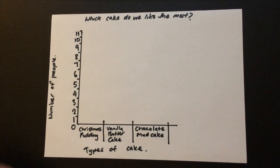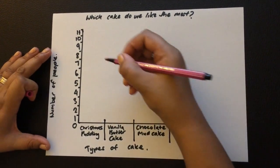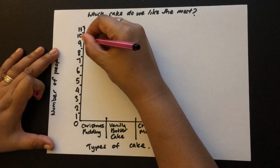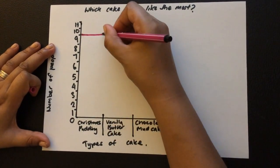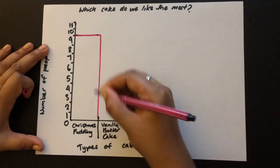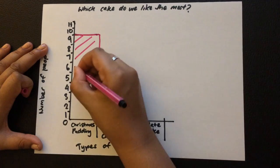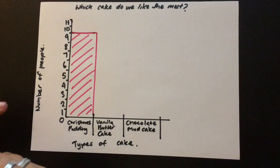So nine people like Christmas pudding, so from here we're going to draw a line to where we think matches here and go straight down, and then we do a quick color in.